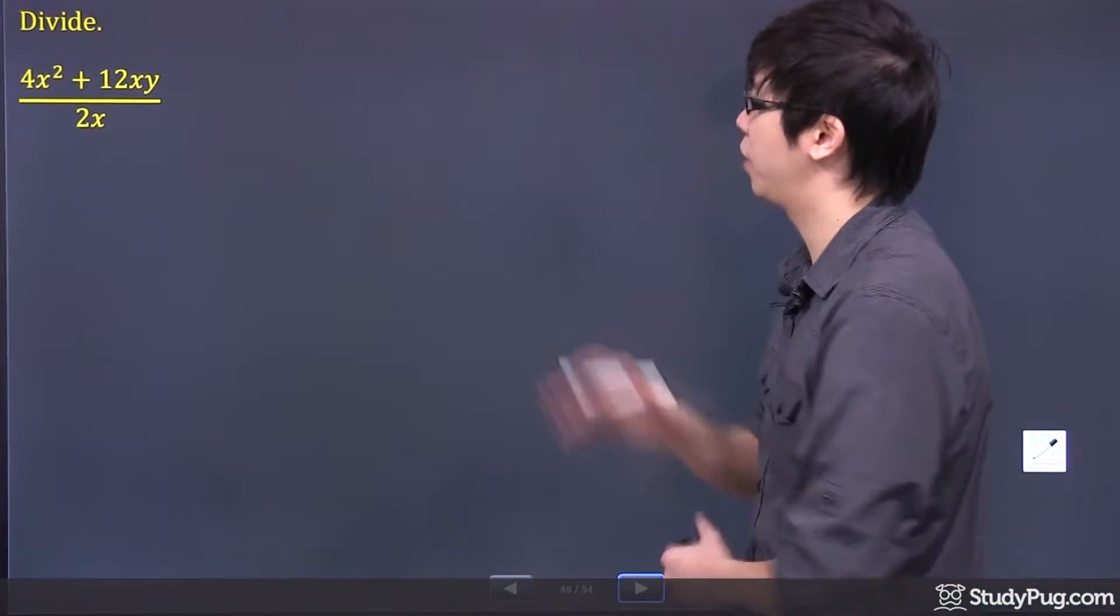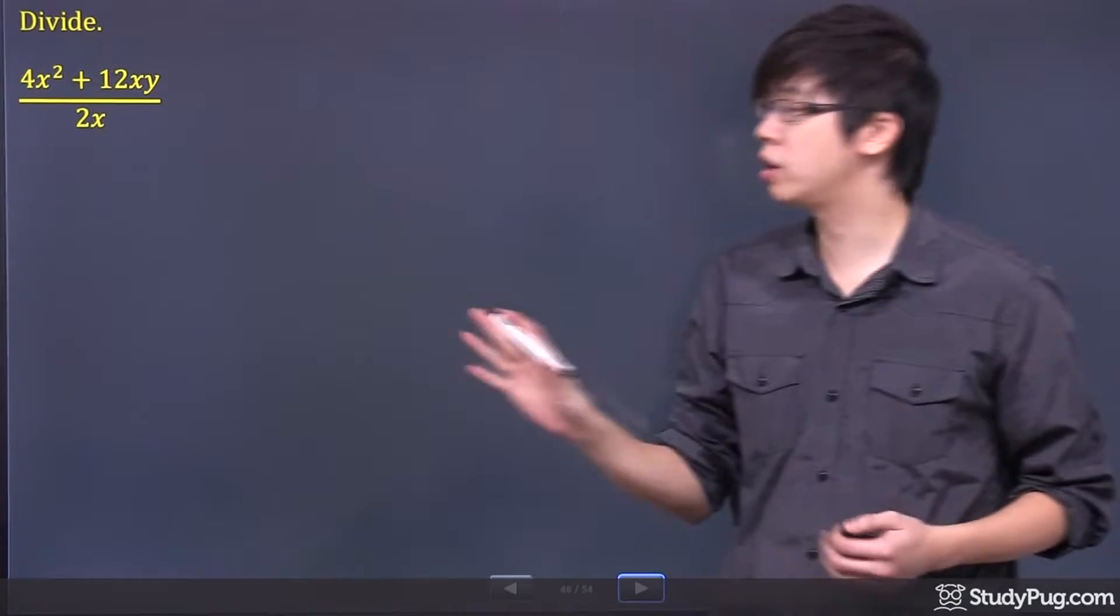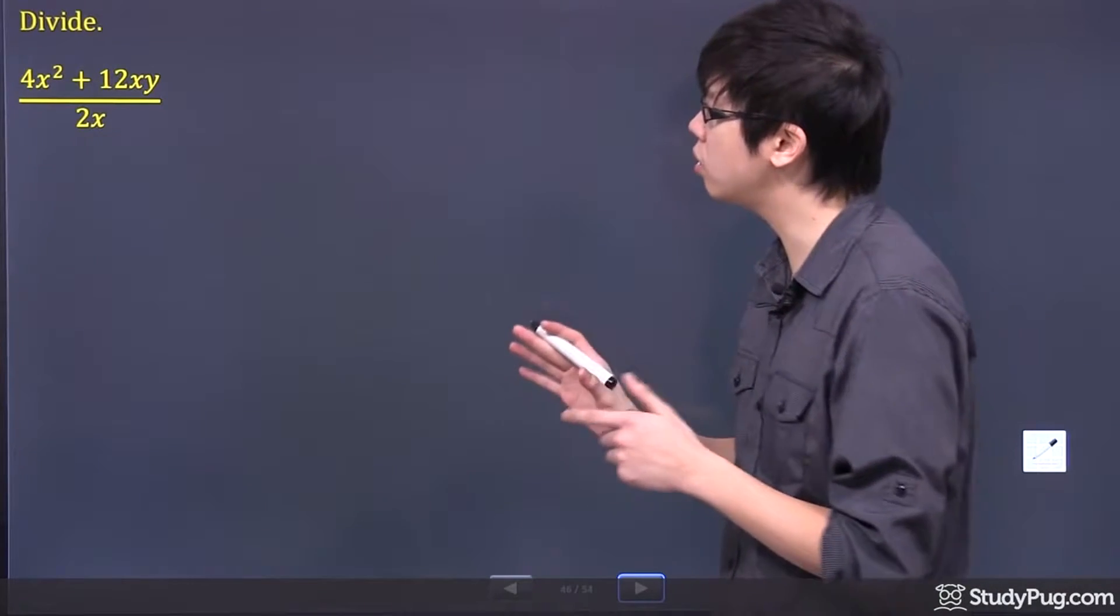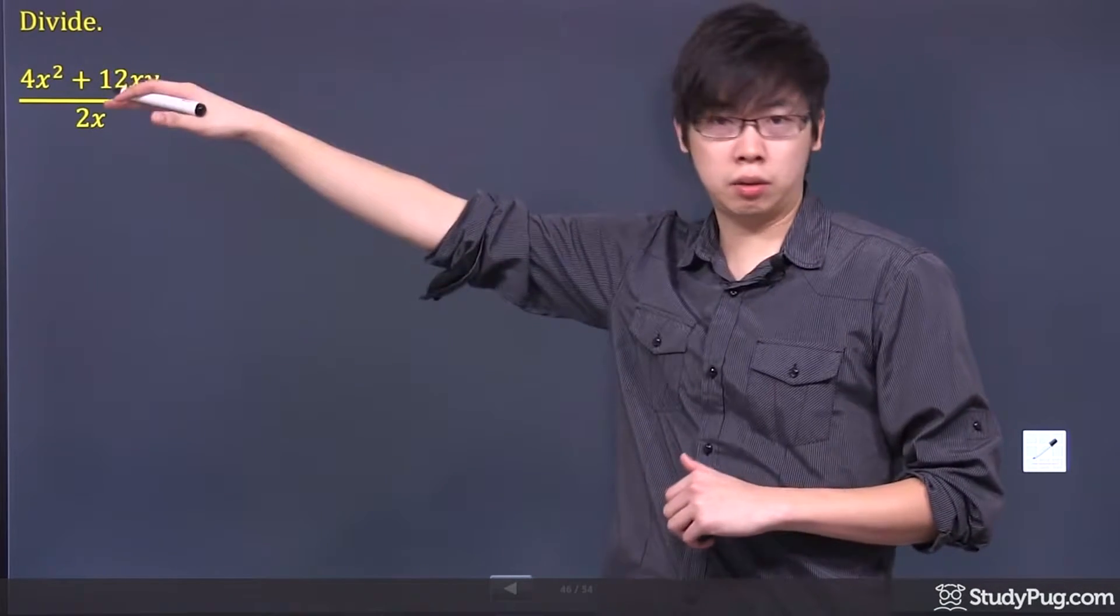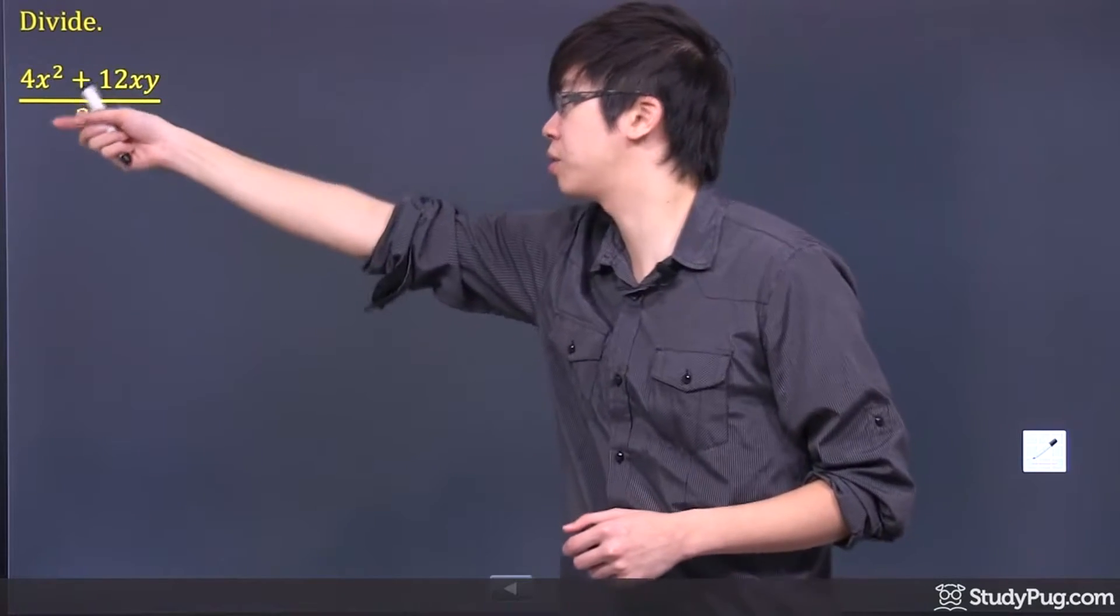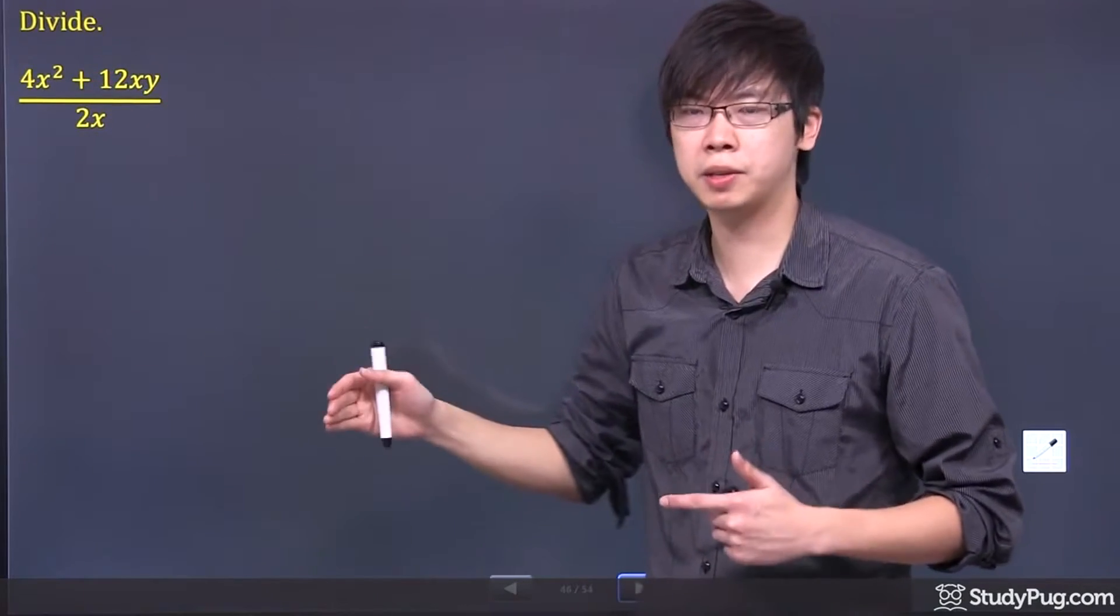Hi, welcome to this question right here. So we got 4x squared plus 12xy divided by 2x. Now if you're trying to divide a bunch of variables and there's two terms on the top divided by something,